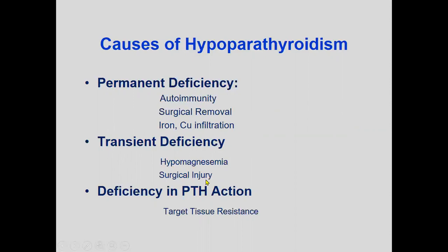There may also be deficiency in PTH action, that is target tissue resistance. The most important cause is autoimmune hypoparathyroidism, which is associated with chronic mucocutaneous candidiasis and primary adrenal insufficiency. This syndrome is known as autoimmune polyendocrine syndrome and is caused by mutations in the autoimmune regulator gene.